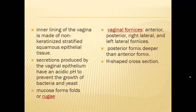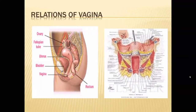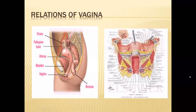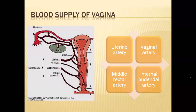The vagina has four fornices: anterior, posterior, right lateral, and left lateral. The posterior fornix is deeper than the anterior fornix. The vagina is related anteriorly to the posterior part of the bladder, posteriorly to the rectum and sigmoid colon, and laterally in the upper part to the Mackenrodt's (cardinal) ligaments with the uterine vessels and ureter. Laterally there is subcutaneous fat and the levator ani. In the lower part it is related to the bulbospongiosus muscle.